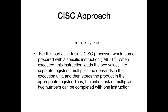The primary goal of the CISC approach is to complete a task in as few lines of assembly as possible. For this particular task, a CISC processor would come prepared with a specific instruction — say, 'mult.' When this is executed, the instruction loads the two values into separate registers, multiplies the operands in the execution unit, and then stores the product into the appropriate register. Thus, the entire task of multiplying two numbers can be completed with one instruction.